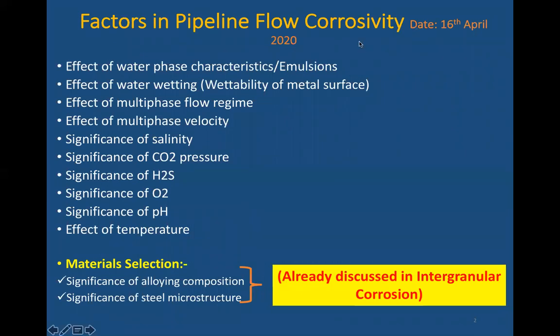Let's see what factors influence the pipeline flow corrosivity. As we know, when oil is flowing through the pipeline there is an oil phase and a water phase. The water phase characteristics — and emulsion formed from oil and water — is one important parameter that can influence pipeline corrosion. Number two is water wetting of the metal surface; based on the material's wetting properties, this can also influence pipeline corrosion. Number three is the multi-phase flow design.